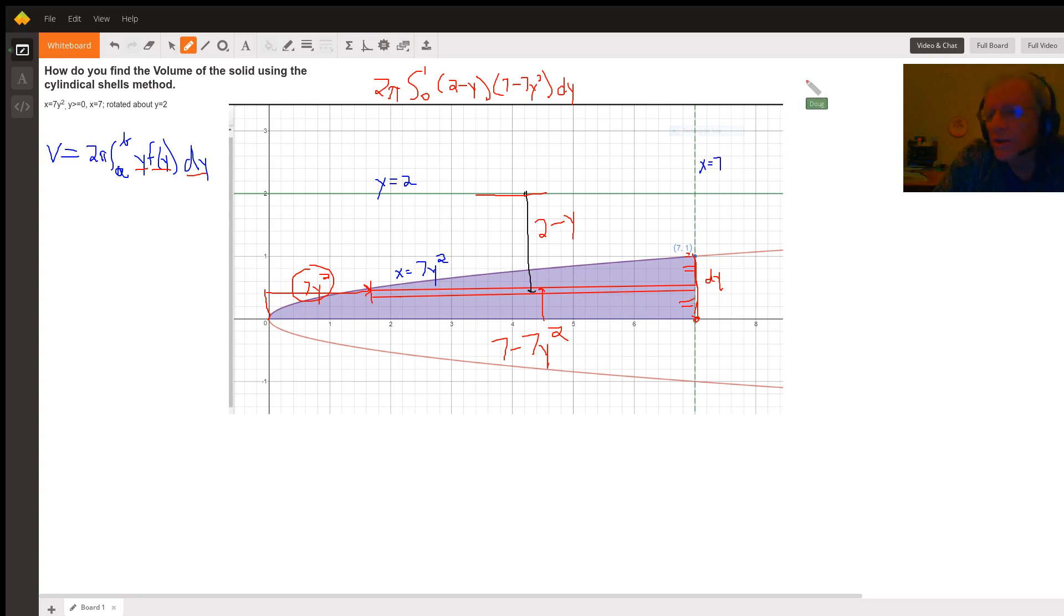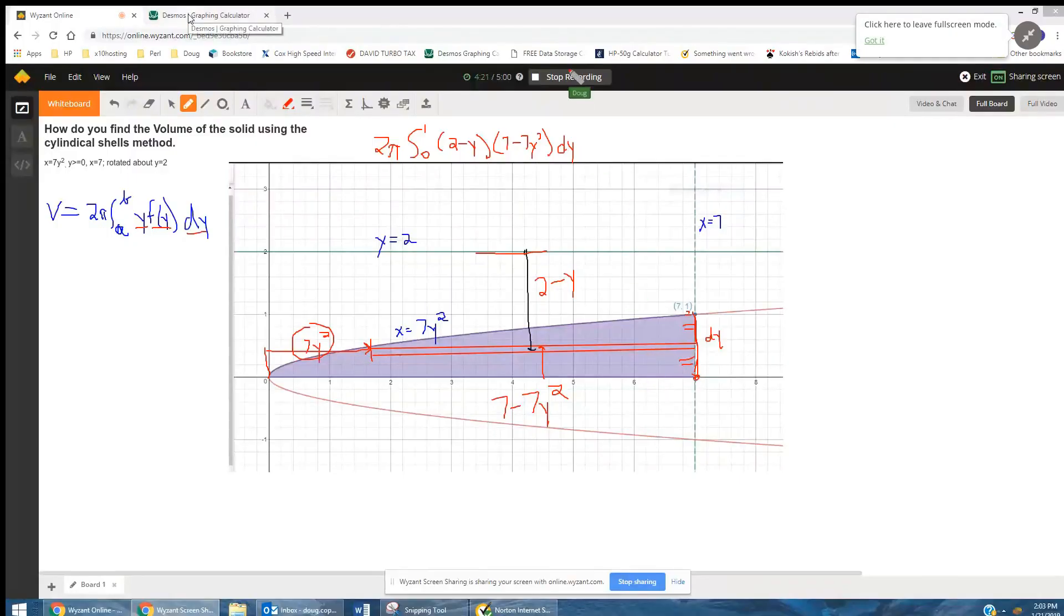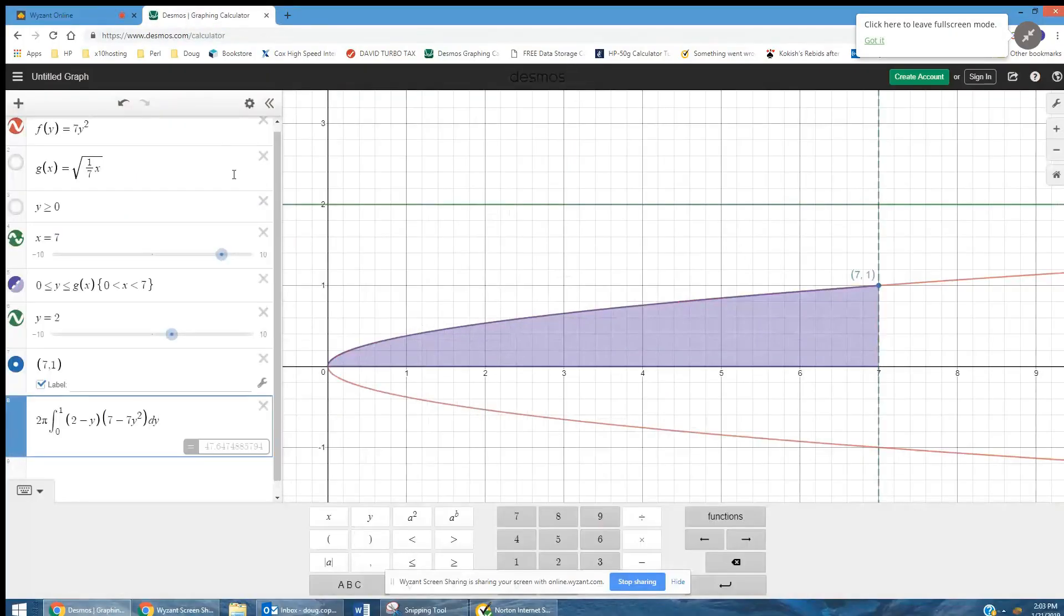Now if I share my screen, go to Desmos, I've already set this up. Here's where I got the snapshot that was pasted on the whiteboard. Here's the integral. It looks like this evaluates to 47.647. Your textbook probably has, if this is a textbook problem and you have an answer key, it probably has pi in the answer instead of evaluating this to so many decimal places because of that 2 pi.